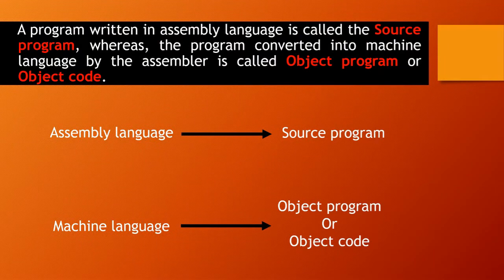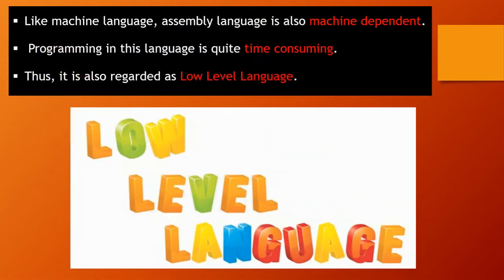A program written in assembly language is called the source program, whereas the program converted into machine language by the assembler is called the object program or object code. So we can say the assembler converts the source program into the object program. Note that assembly language is also machine-dependent — it works on the same machine on which the program is created, and it is also time-consuming. Since only symbols are used, it is also regarded as a low-level language.